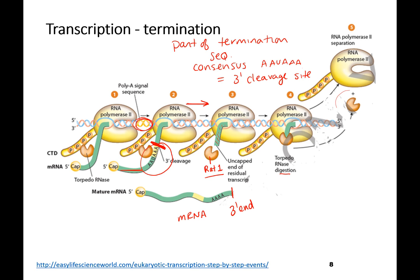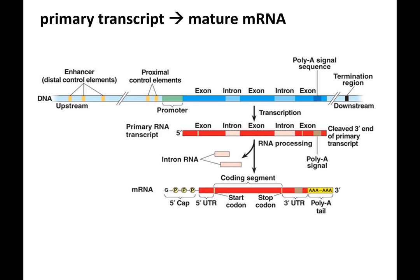The three prime end of the messenger RNA is made by a cleavage reaction, and then the poly A tail will be added. Mature mRNA means that it's been processed: it has a five prime cap, a three prime poly A tail, and the introns have been spliced out.